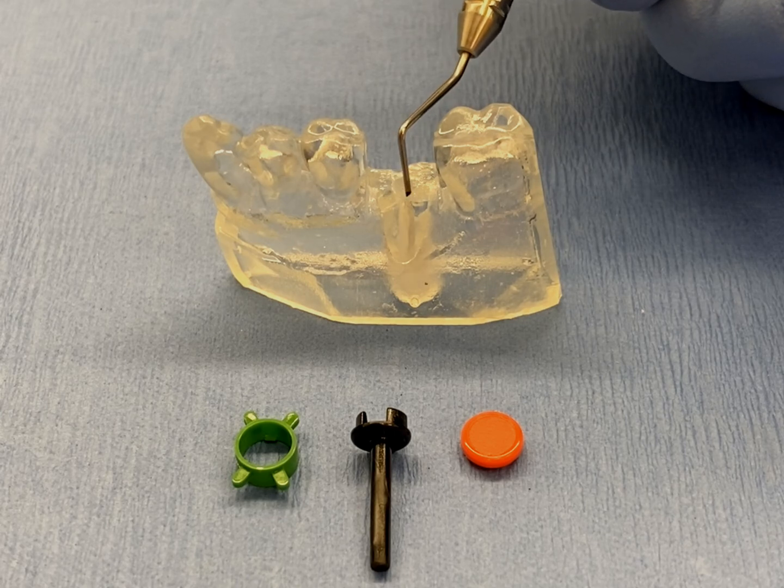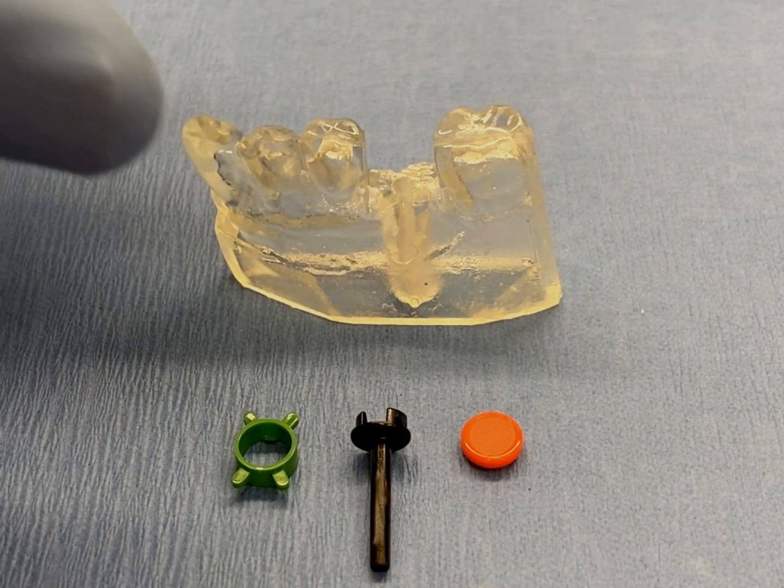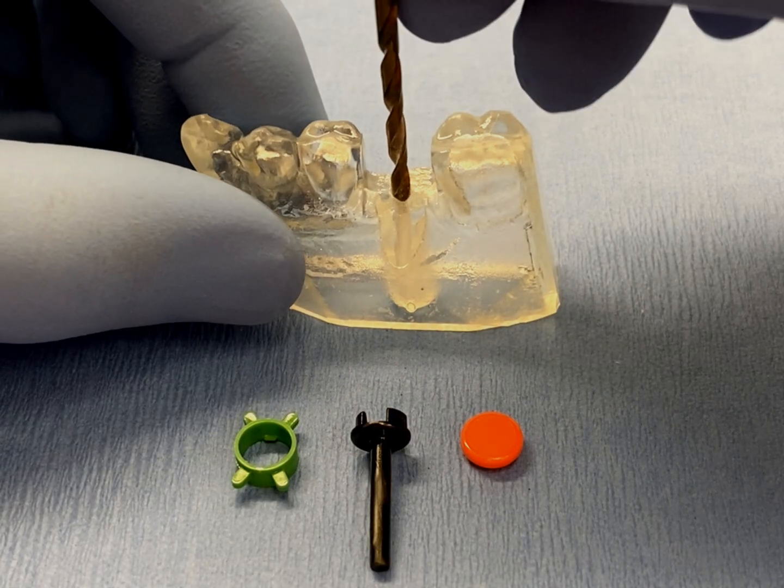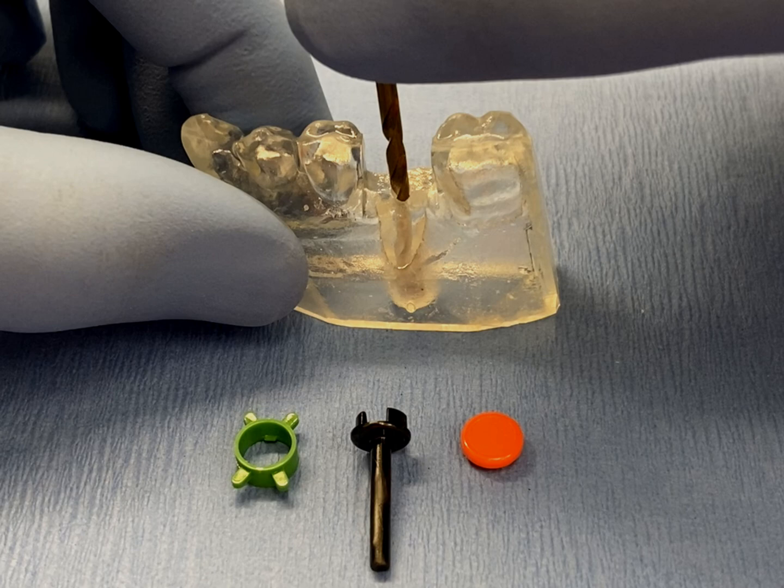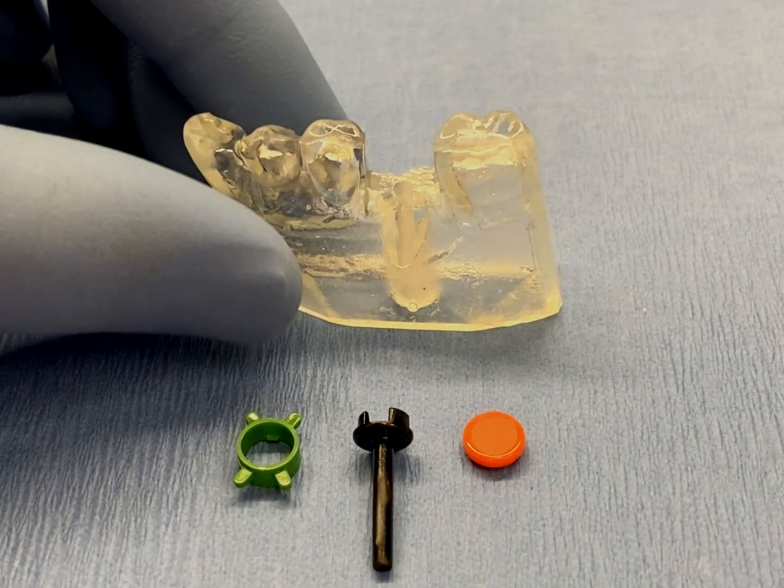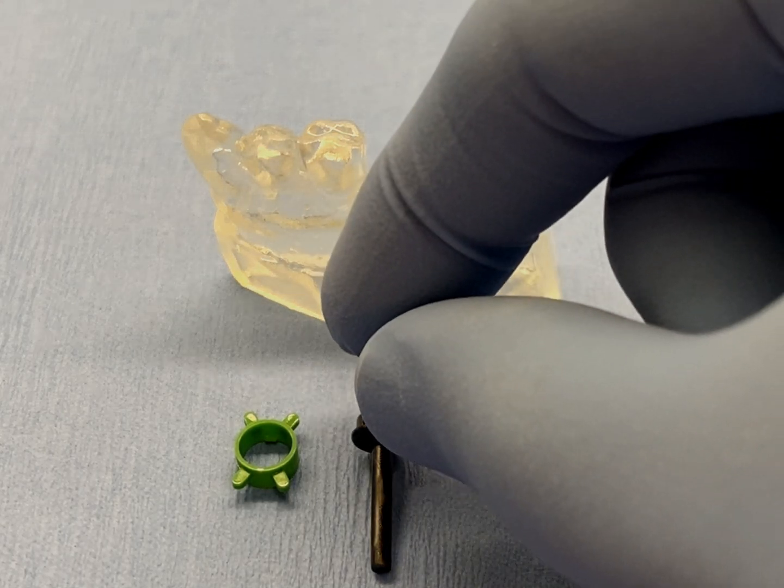Utilize a dental probe to validate that the bottom of the hole can be reached. If any distortion or hindrance is noted, utilize a 2.35mm or a 3/32nd drill to open the cylinder to the correct diameter. This can be accomplished by either rotating the drill bit by hand or using a lab handpiece with light pressure on a very low speed.